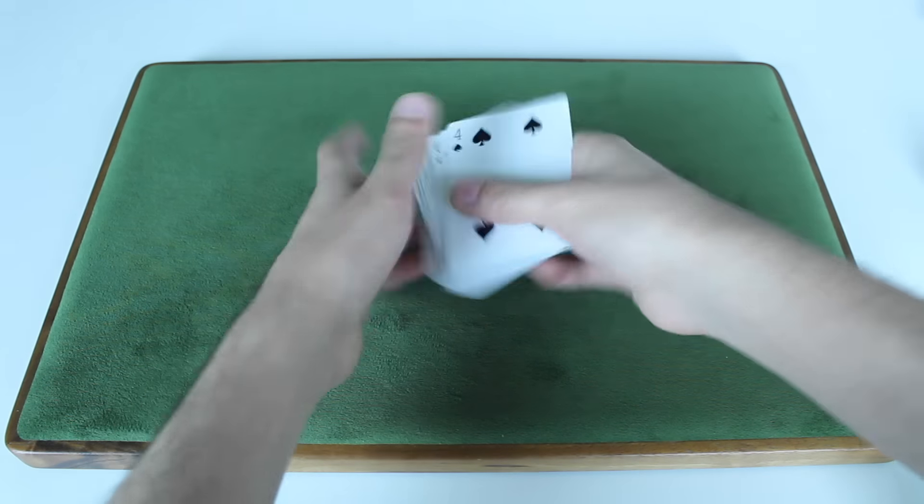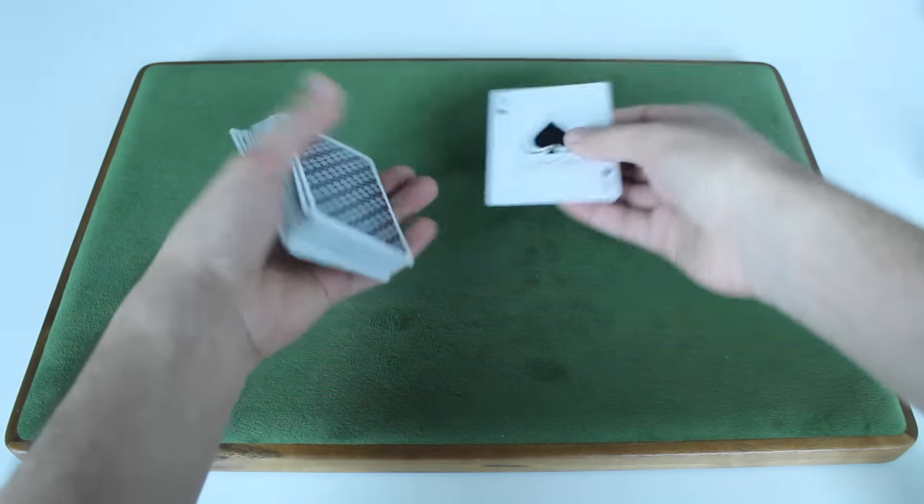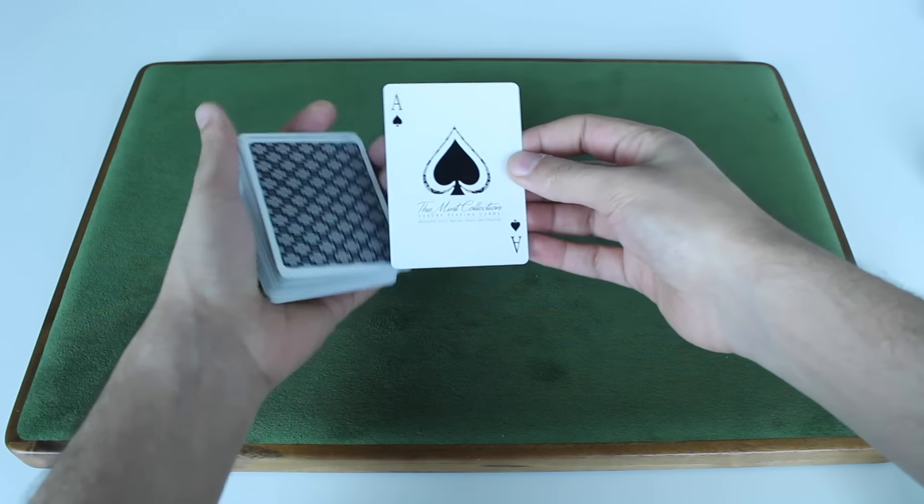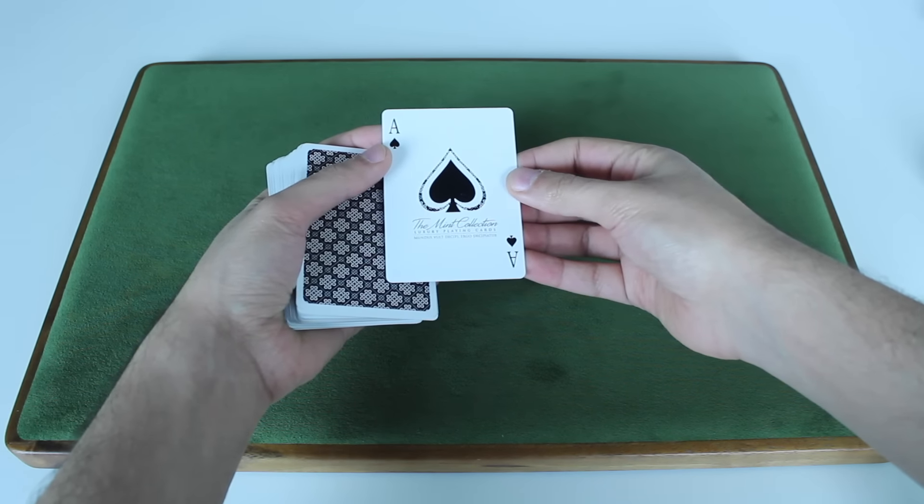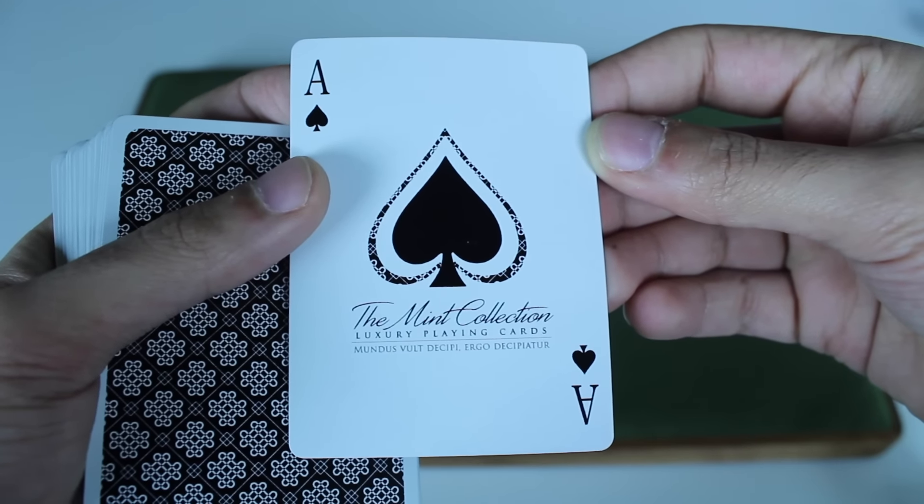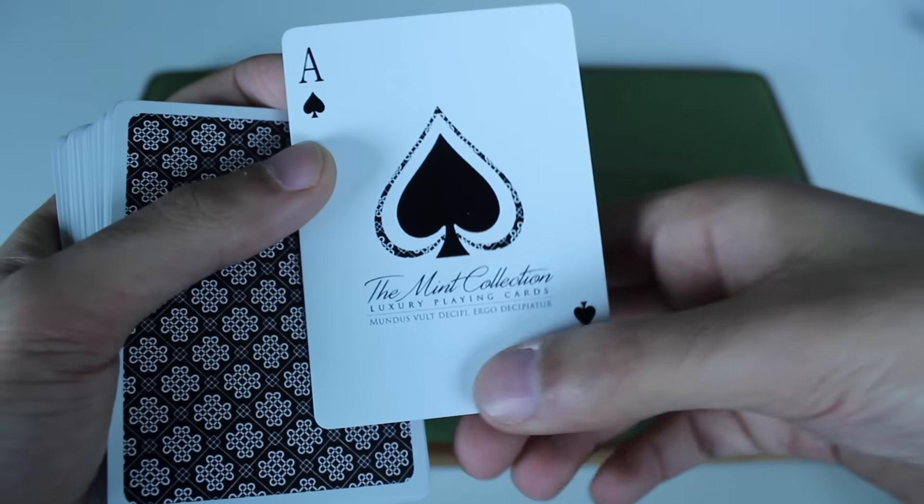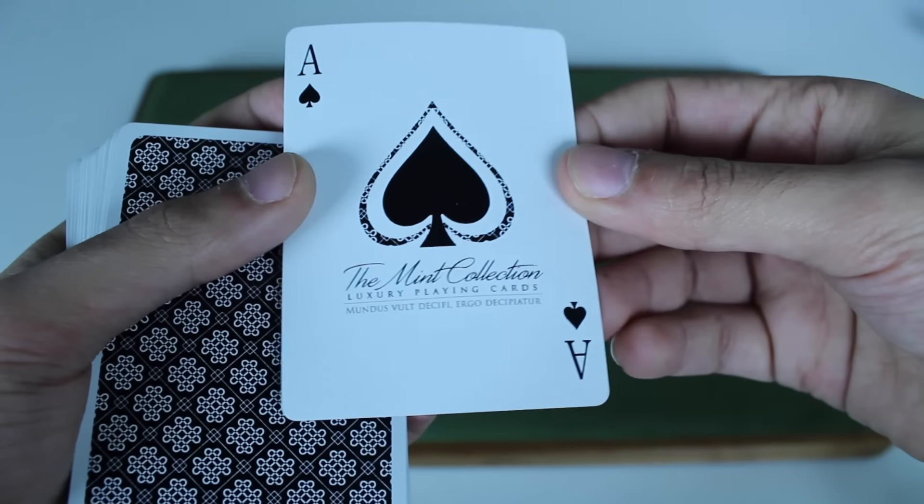Okay, what else? So let me show you the Ace of Spades. I love the Ace of Spades. It's just very clean. Let me actually zoom in and give you a better look on the spade. Alright, so take a look at that. Just a really classy Ace of Spades, says the Mint Collection, Luxury Playing Cards. And then this is a Latin phrase, I'm not going to try to pronounce it.